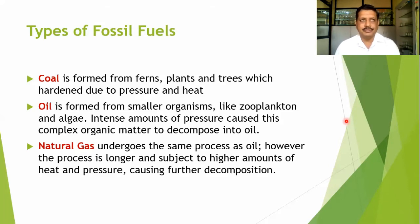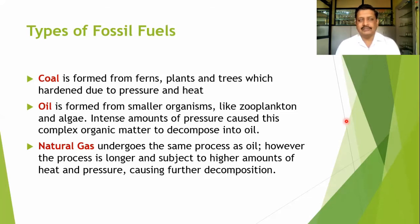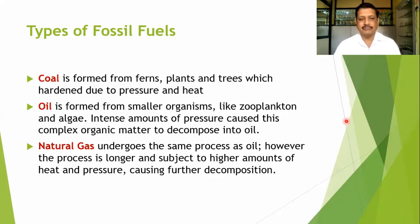Particularly plants are involved in the formation of coal, which is a hardened matter formed due to pressure and heat. Oil is formed mostly from zooplankton and unicellular organisms, whose complex organic matter converts into oil after decomposition. Natural gas follows a similar process to oil formation, however with a higher amount of heat and pressure, which converts oils into a gaseous state causing further decomposition.